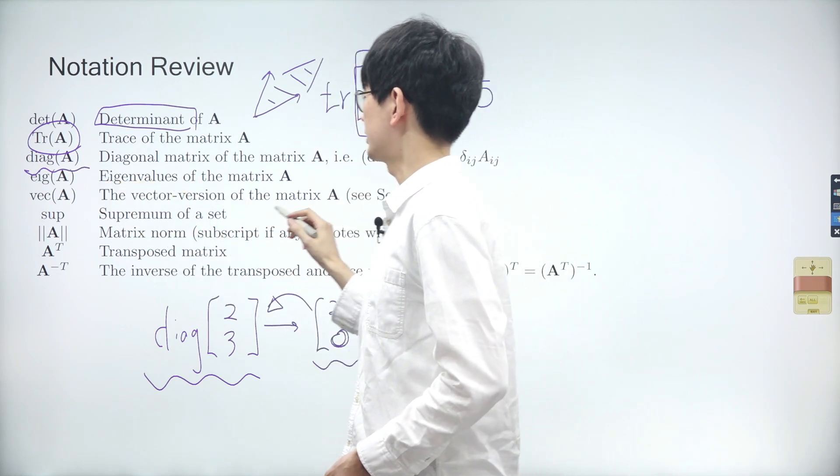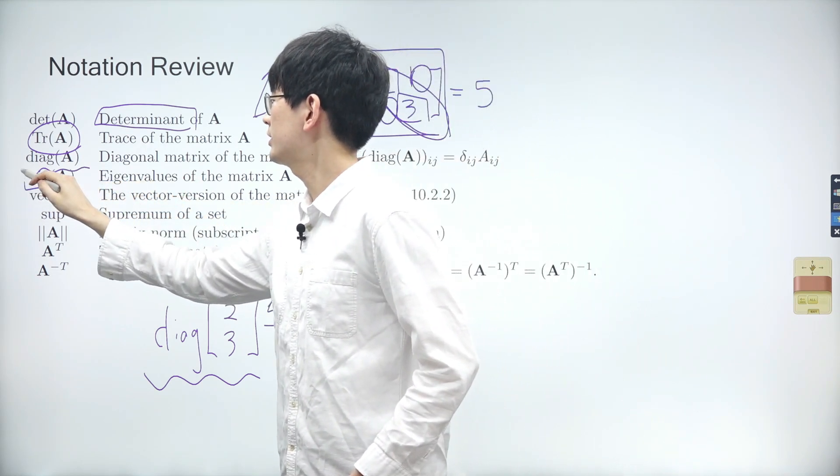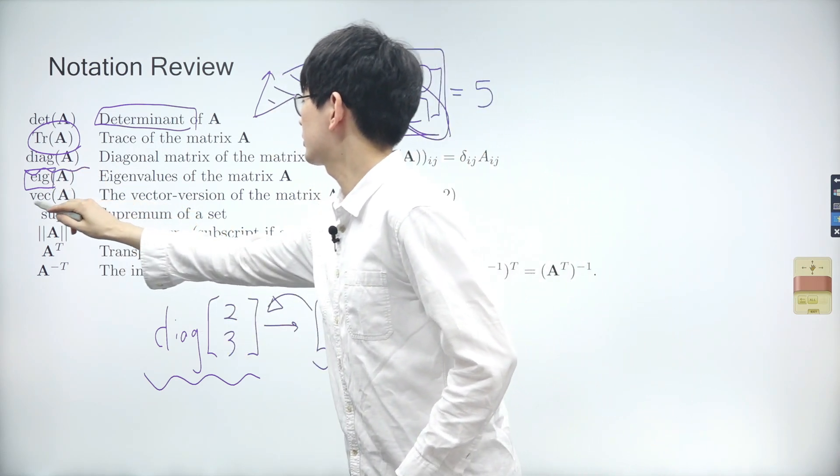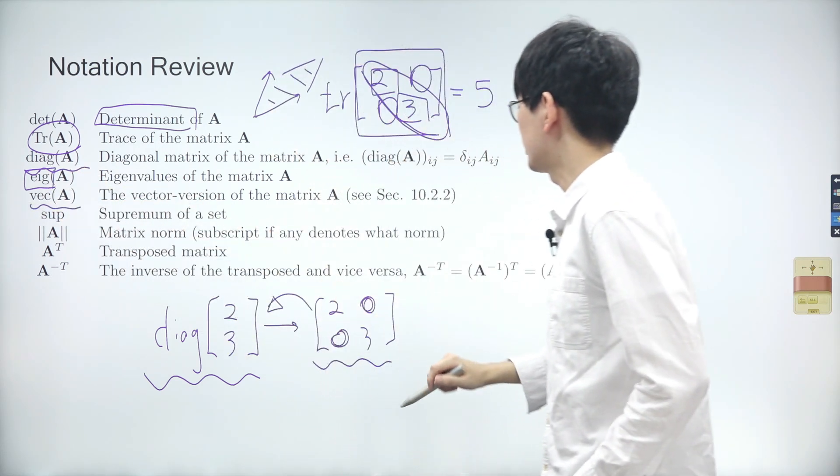Eigenvalues of a matrix are represented by the first three letters E, I, and G. Next, let's look at the vectorization of matrix A.